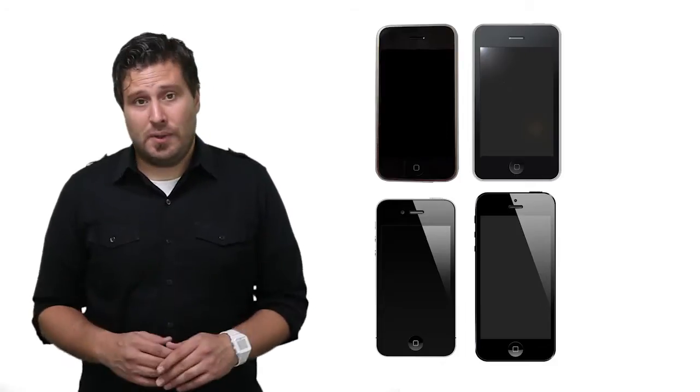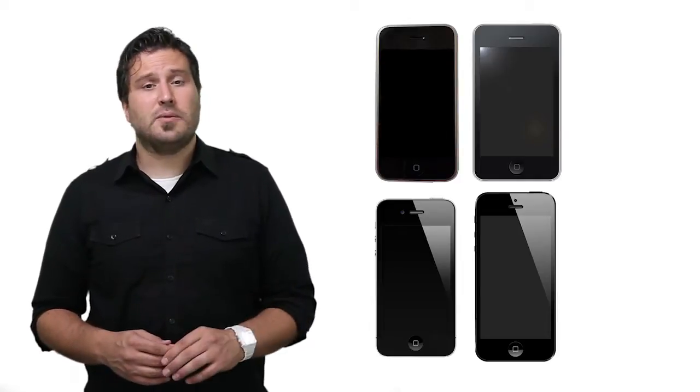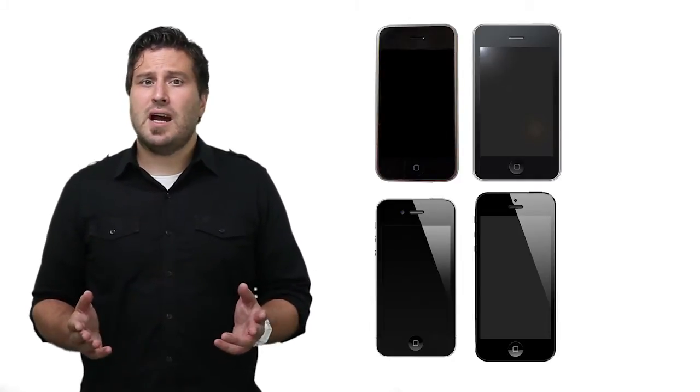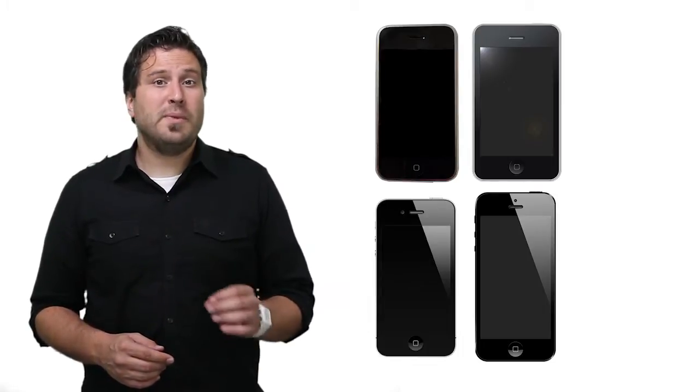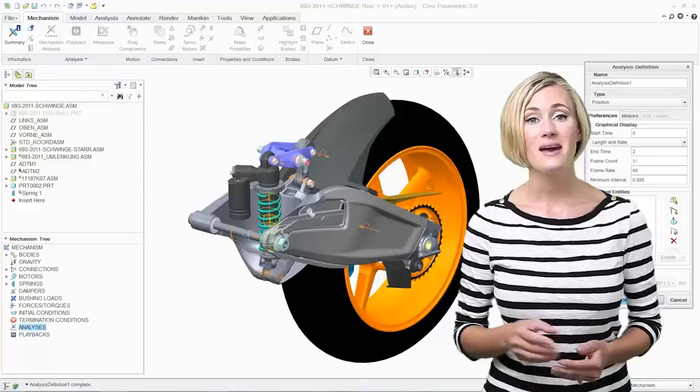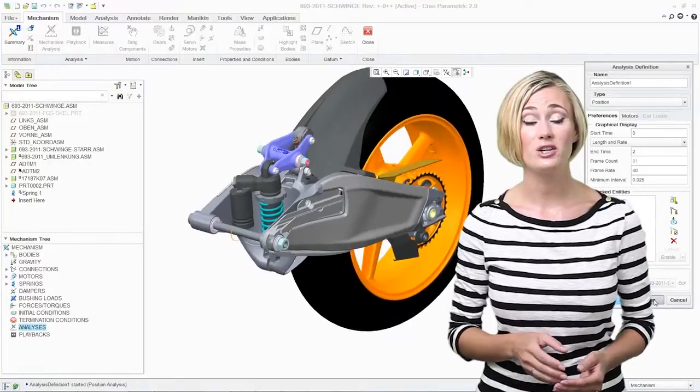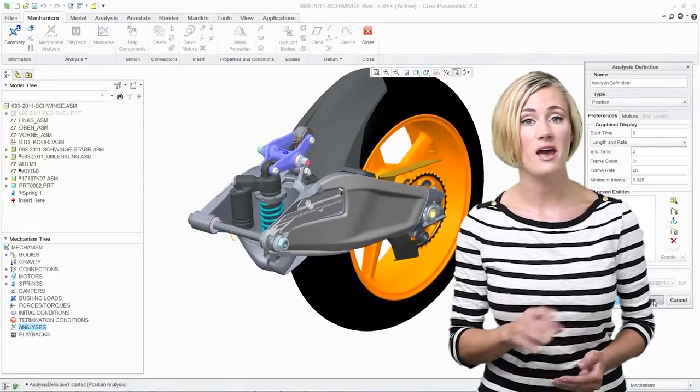To make matters even more complex, as everyone who's ever developed a product knows, product designs evolve over time. Those changes will affect what materials are used. That means your team needs a way to validate your design and materials after every iteration.